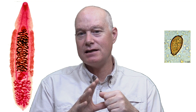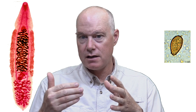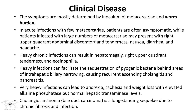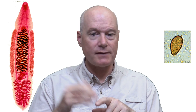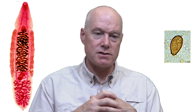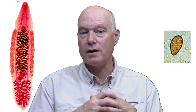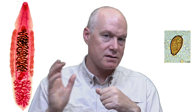Heavy infections can also facilitate bacteria getting sequestered in these areas. You can end up with areas where the biliary system is narrowed, causing bacteria to be trapped, leading to recurrent infections — ascending cholangitis — and even inflammation of the pancreas. Very heavy infections can lead to anorexia, cachexia, and weight loss. Laboratory abnormalities include elevated alkaline phosphatase in the presence of normal liver transaminases — think of that as a diagnostic clue. Unfortunately, there is an association with cholangiocarcinoma, a bile duct cancer that is a long-standing sequela due to chronic fibrosis and infection.